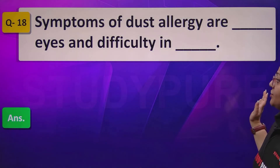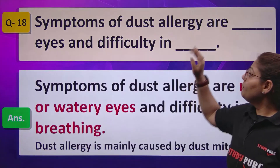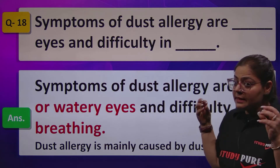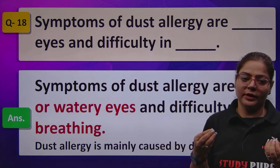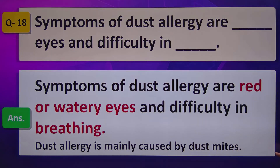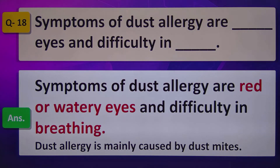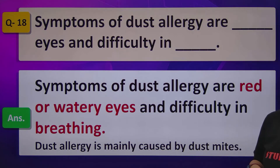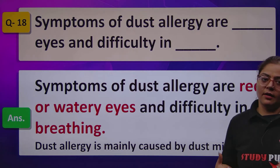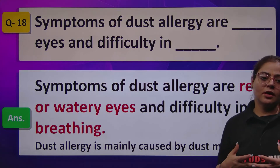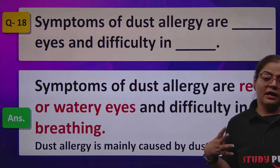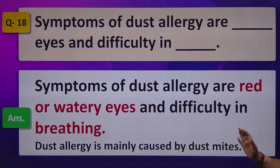The symptoms of dust allergy are red, watery eyes and difficulty in breathing. In dust allergy, the first effect is on the eyes — they become red and constantly water. You also have difficulty breathing because dust particles enter the lungs. For your knowledge, dust allergy is mainly caused by dust mites. If your occupation involves working in dusty environments, such as an AC factory with fibers, you are prone to dust allergy and should avoid such workplaces if you have breathing problems.